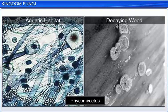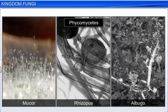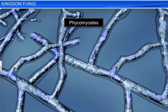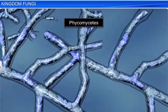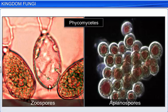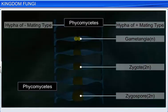Phycomycetes are found in aquatic habitats, decaying wood in moist places, and as obligate parasites on plants. Mucor, Rhizopus, and Albugo are examples of Phycomycetes. Phycomycetes have aseptate and cenocytic mycelium. They reproduce asexually by zoospores in the case of motile gametes, and by aplanospores in the case of non-motile gametes. Sexual reproduction leads to the formation of zygospores after the fusion of gametes. The gametes may be either similar or dissimilar.